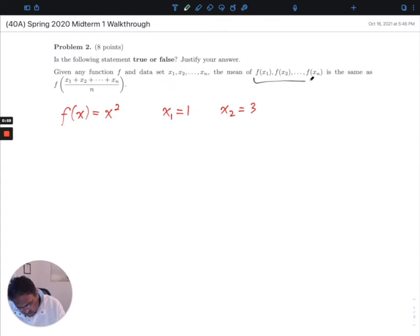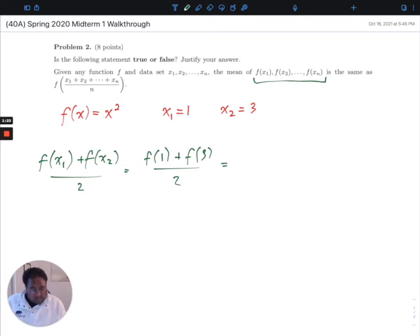So first, I'll look at f of x1 and f of x2 and calculate their mean. If I'm taking the average of them, it looks something like this. What's f of x1? Well, that's f of 1. And f of x2, well, that's f of 3. And that's divided by 2. f of 1 is 1 squared, that's just 1. f of 3 is 3 squared, that's 9. So the mean of those two things is 5.